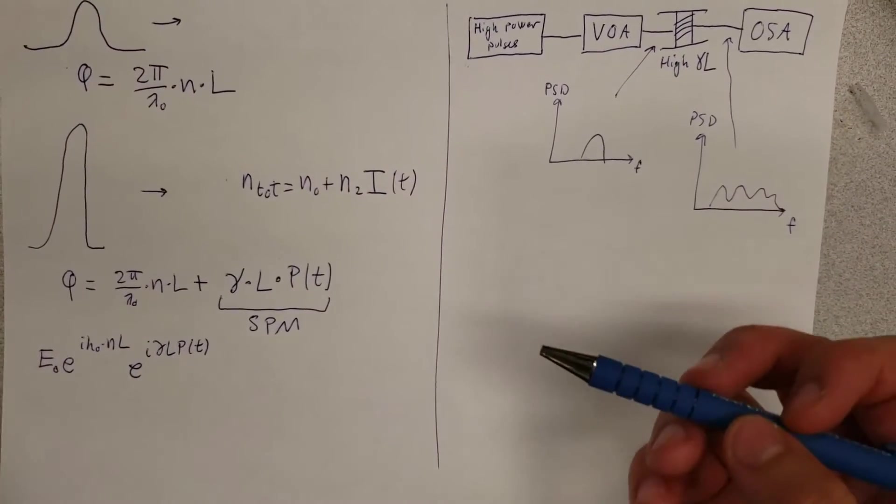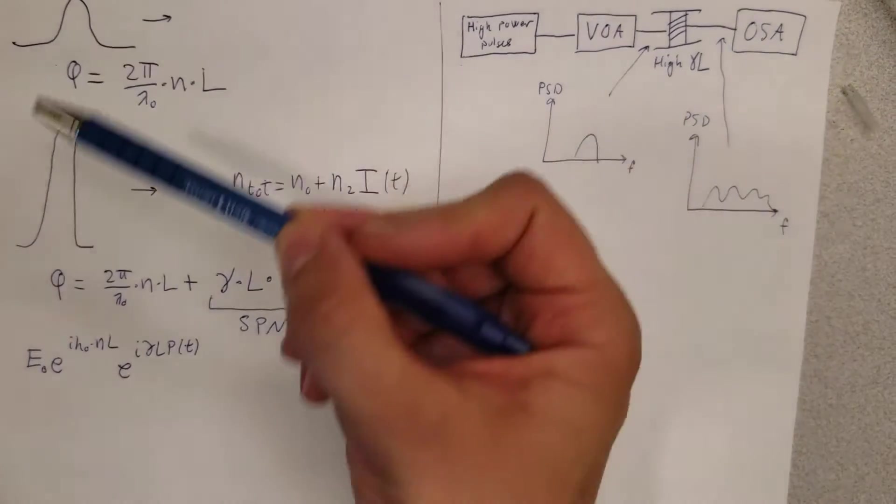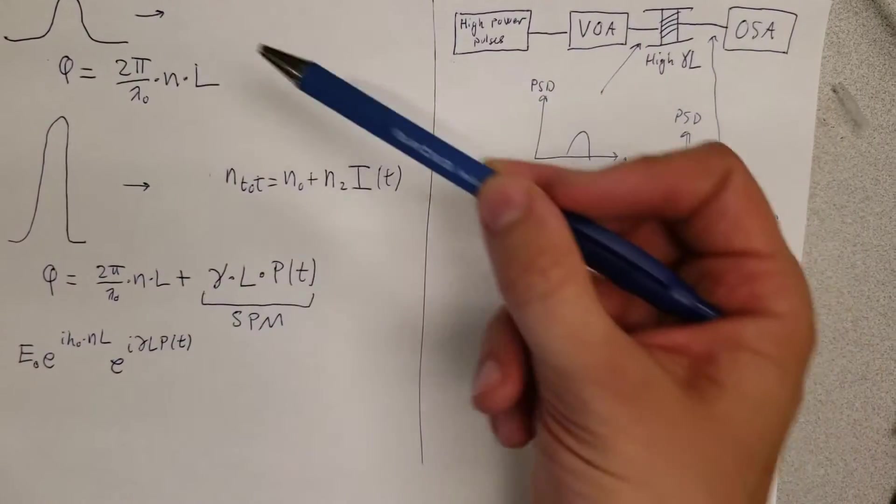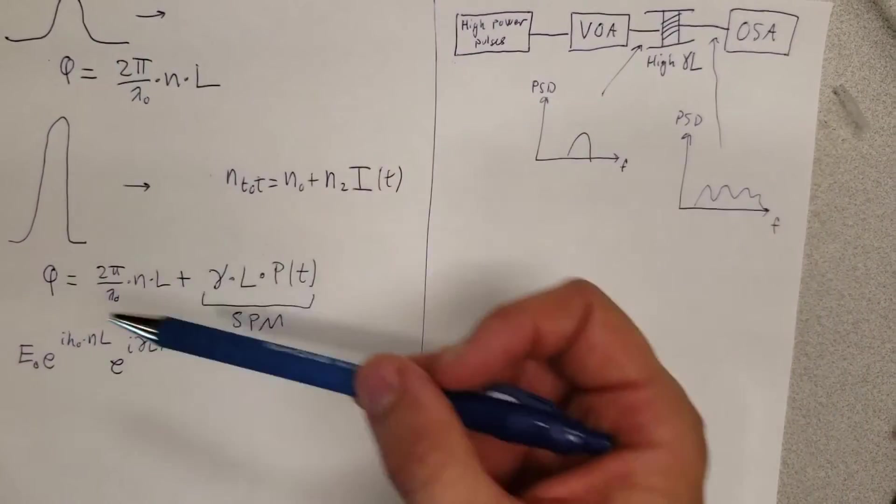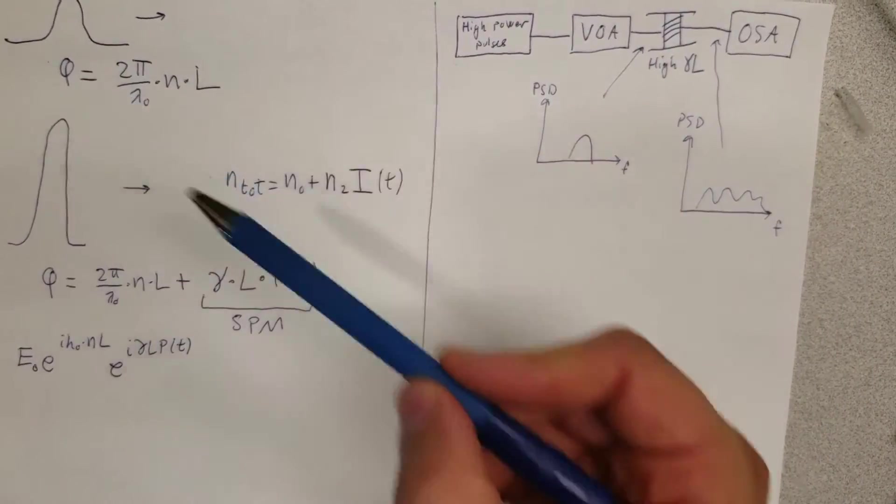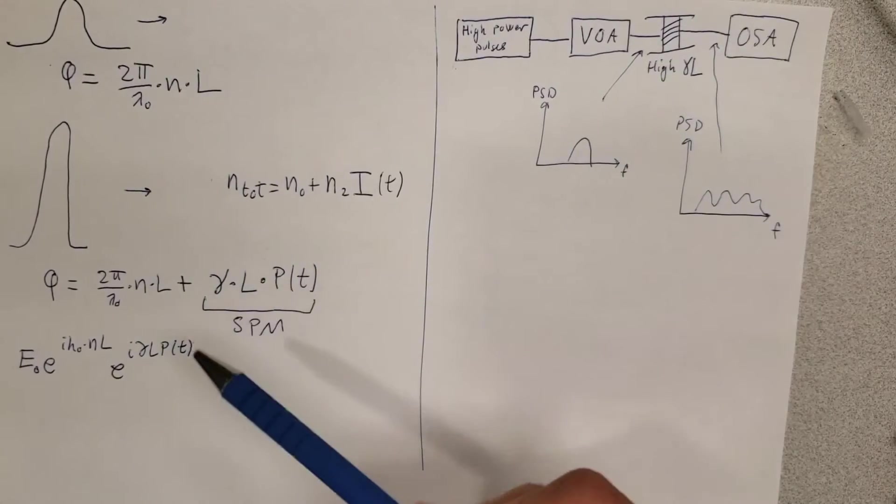Hello and welcome to another video on basic fiber optics. In the previous video I explained how we can generate a super continuum of frequencies using a high power pulse and an effect called self phase modulation.